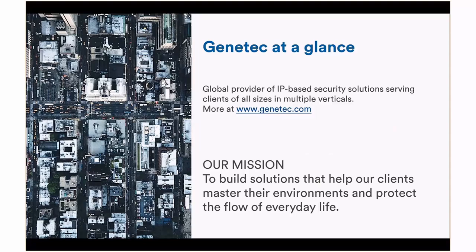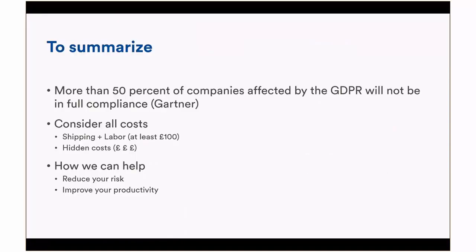To summarize: more than 50% of companies affected by GDPR will not be in full compliance. Consider your costs — at least £100 per request, and far higher when factoring in hidden costs from a PR and privacy perspective. Think about how a digital evidence management system can help — it requires nothing installed locally, is very cost-effective, and can reduce your risk, improve productivity, and reduce costs. That's exactly what Genetec Clearance can do.